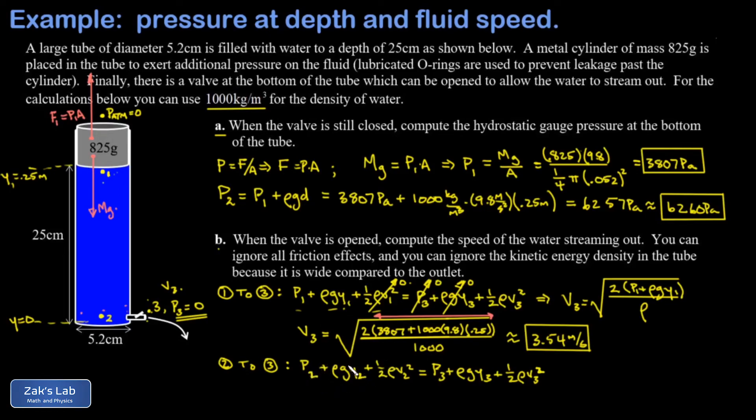If I write down Bernoulli's equation here, I have P2 computed in part A, my gravitational potential energy density is zero at point two, my kinetic energy density is also zero provided I stay away from that valve. P3 is still zero because that's atmospheric pressure in gauge units, and the height at point 3 is also zero.